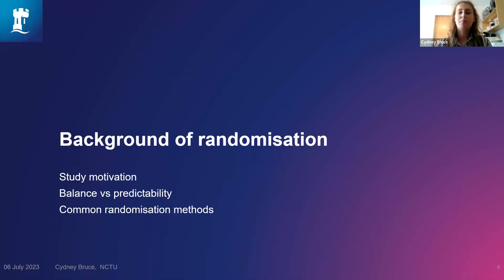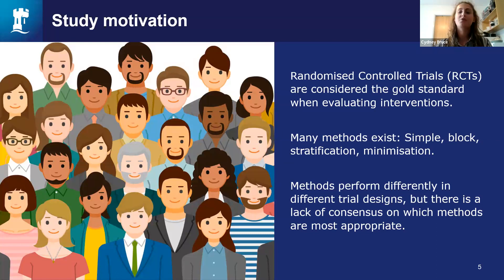So let's start with a background of randomisation. The randomised controlled trial is often considered the gold standard when evaluating interventions, because of its ability to remove many different biases, such as selection bias, chronological bias, and confounding. There are many different methods that exist, and each of these have different benefits and drawbacks, most commonly relating to balance and predictability, and each method will perform differently depending on the design of the trial.